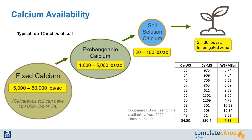We recently conducted an experiment using 10 soil samples pooled in the southeast. The results are in the graph in the bottom right corner of this slide. We sent the samples out and received the water-soluble and Melek-3 content in pounds per acre. After averaging the samples and dividing the water-soluble calcium by Melek-3 calcium, we found that approximately 7% of the calcium found in the soil samples was actually plant available.